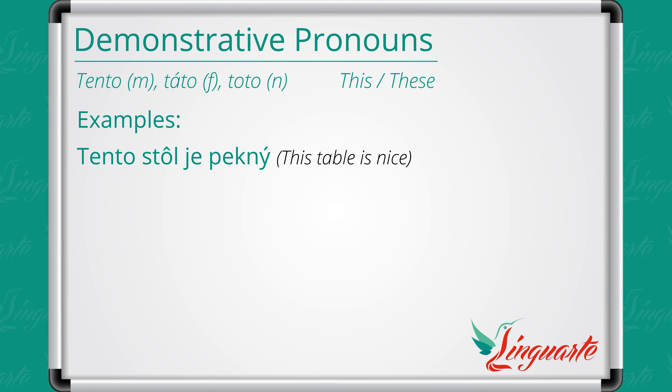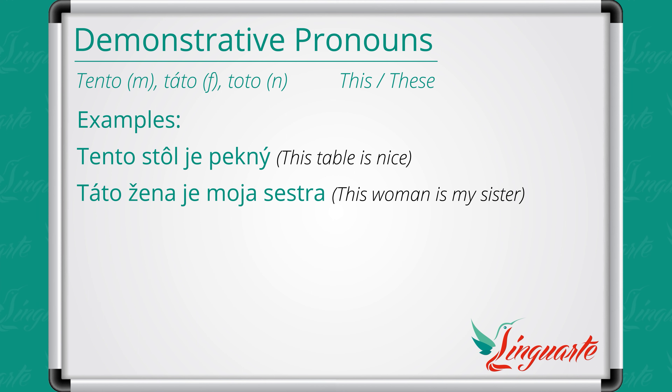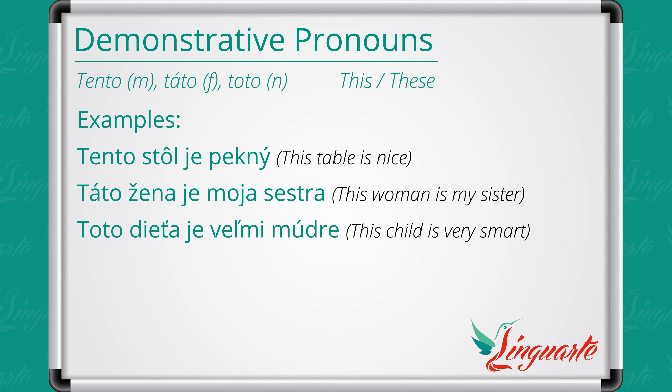Example: Tento stôl je pekný. — This table is nice. Example: Táto žena je moja sestra. — This woman is my sister. Example: Toto dieťa je veľmi múdre. — This child is very smart.